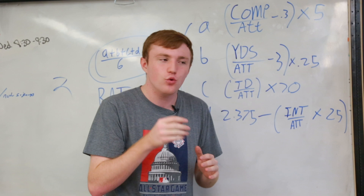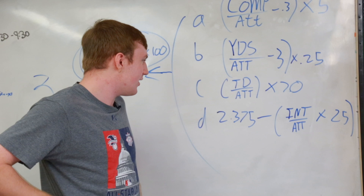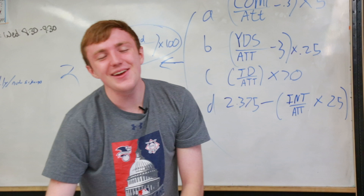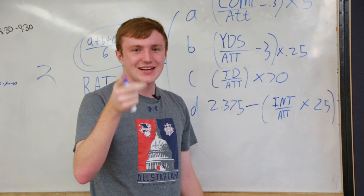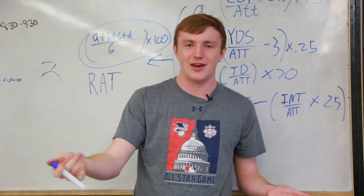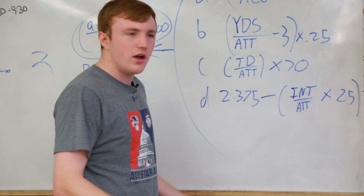The same goes for touchdown rate. A quarterback could throw a touchdown every single pass and passer rating doesn't care. If you imagine a quarterback who threw a touchdown every time, passer rating would have him the exact same as a quarterback who threw a touchdown every 8.421 attempts. According to passer rating, you're a maximum quarterback if you average one touchdown every 8.421 attempts.